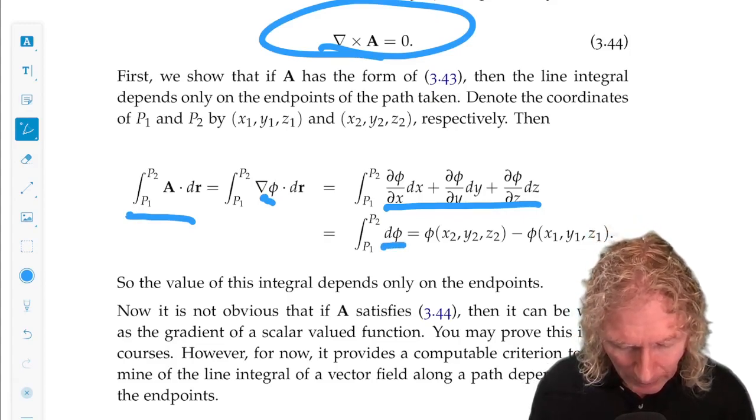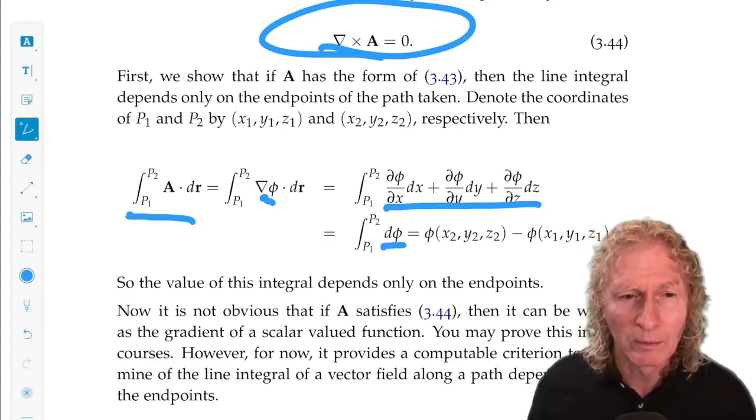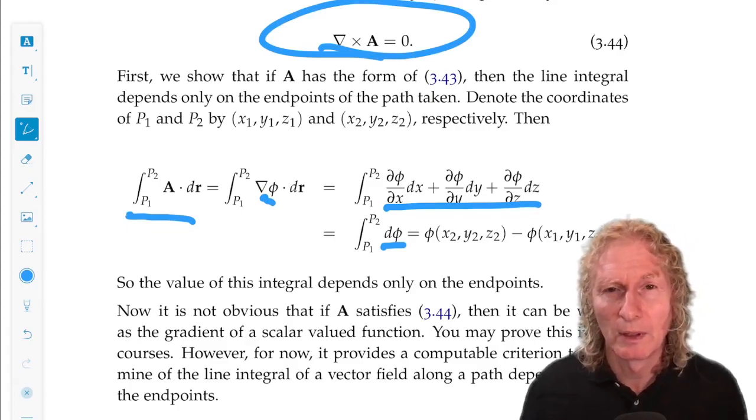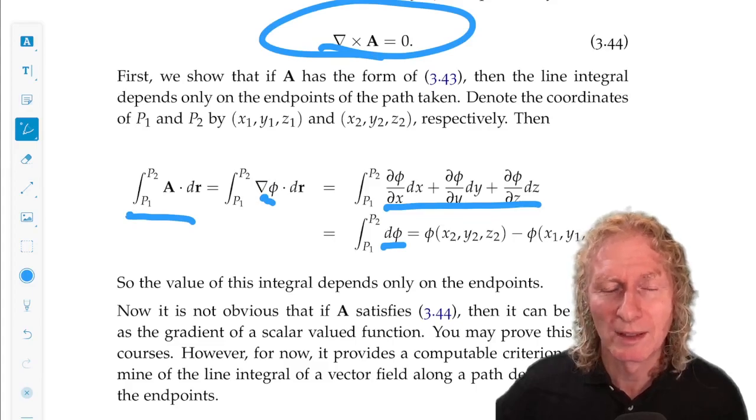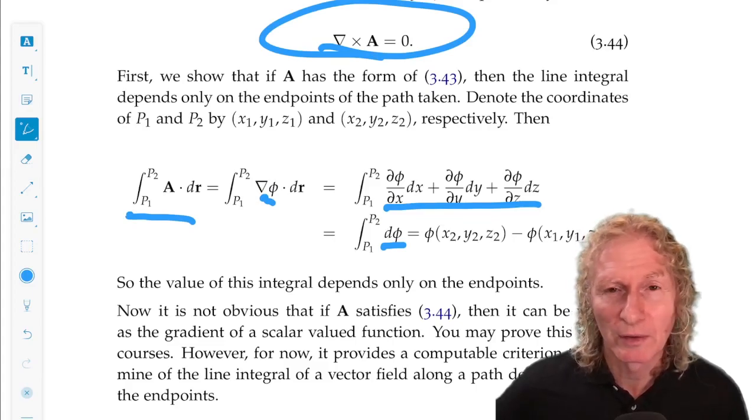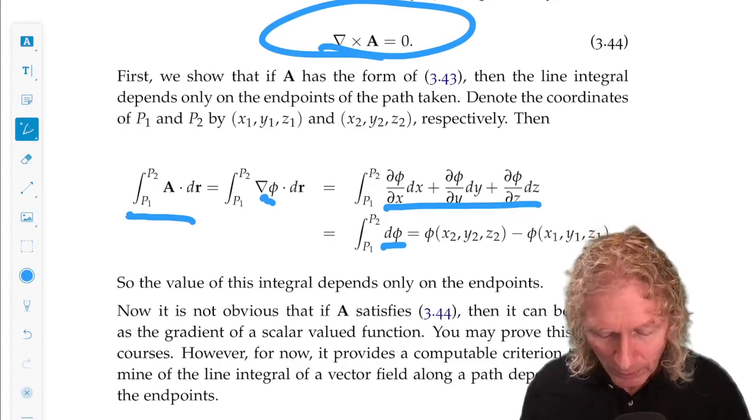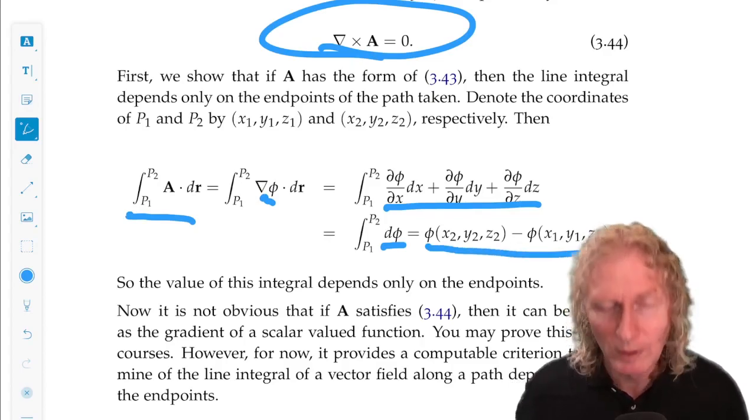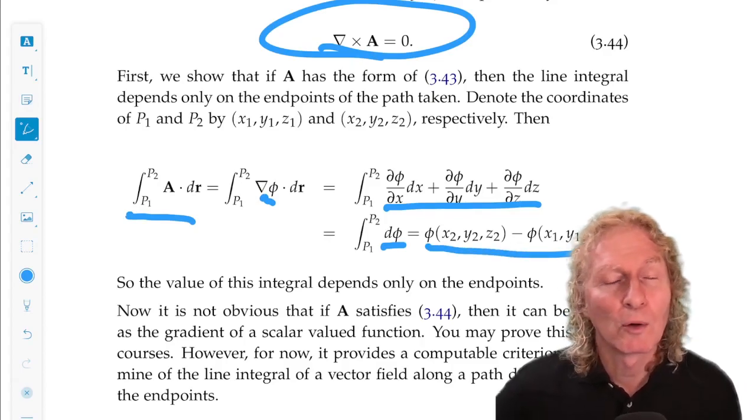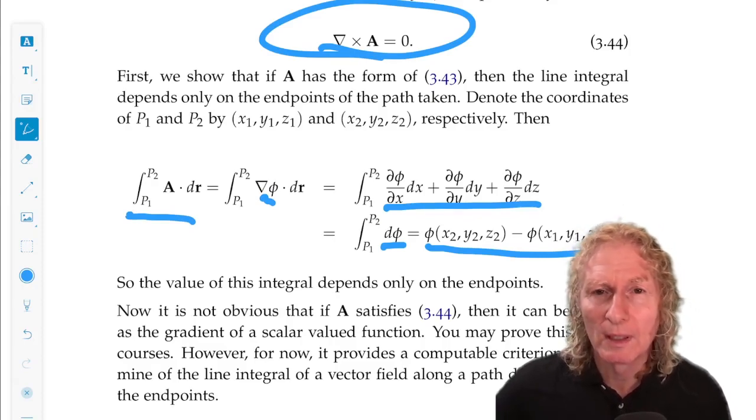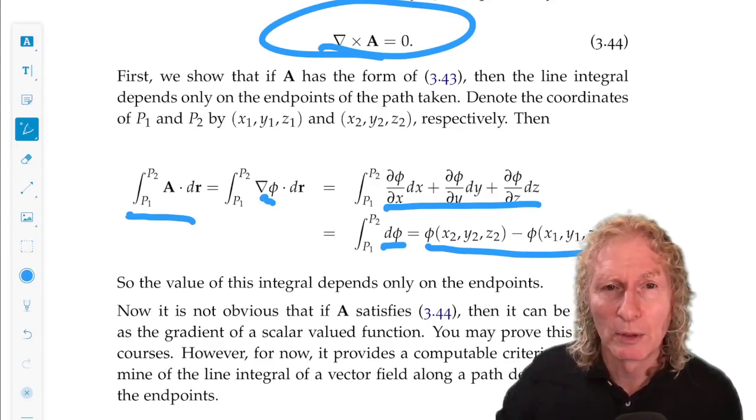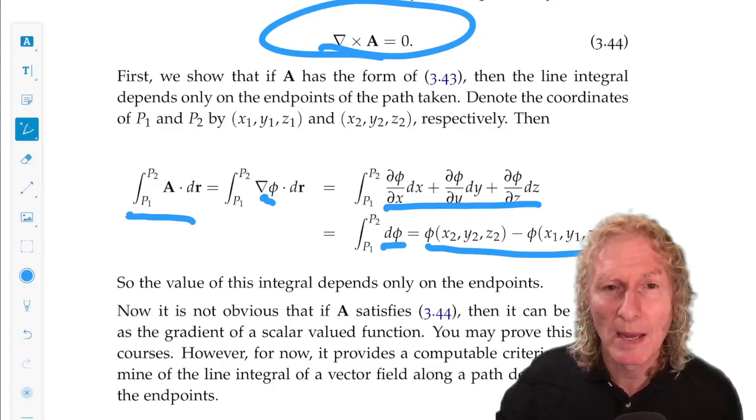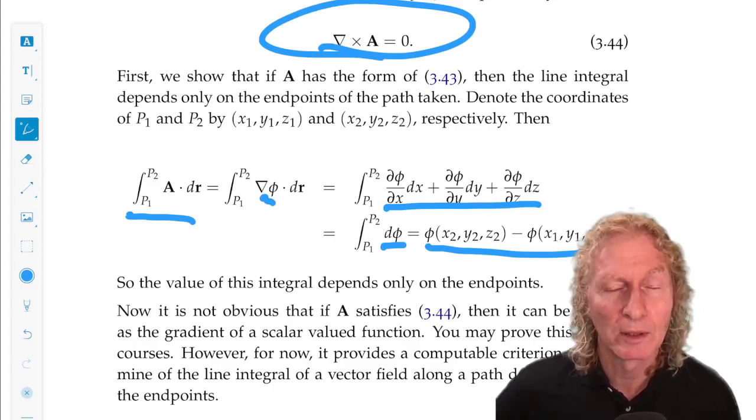And look, from the fundamental theorem of calculus, if we integrate this, the total differential of a function, it's just the value of the function, the difference of the function at the two endpoints. So the path between, in this particular case, when A is the gradient of phi, the path between p1 and p2 does not matter in the computation of the line integral.